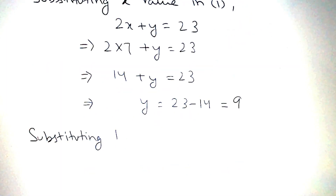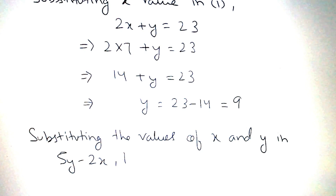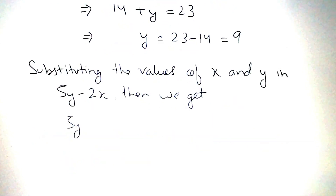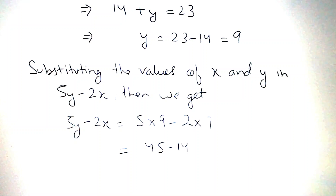Now, substituting the values of x and y in 5y minus 2x, we get 5y minus 2x is equal to 5 into 9 minus 2 into 7, that is 45 minus 14, which is equal to 31.